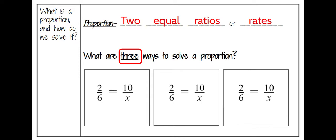We could first look at the proportion and take a peek horizontally to see if there's a relationship in the numbers. If you look at the first example on the left, you will see that to get from 2 to 10, you simply multiply by 5. So if you do the same thing to the denominator, 6 times 5 would give you a value of 30.